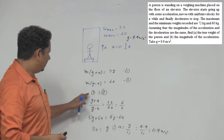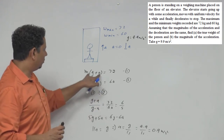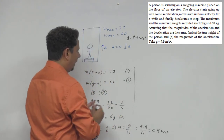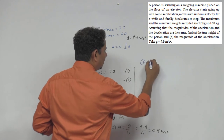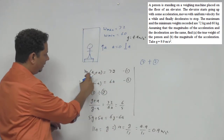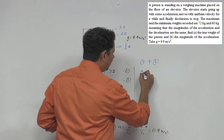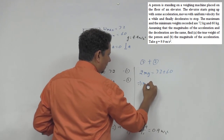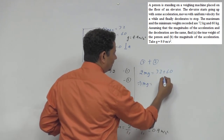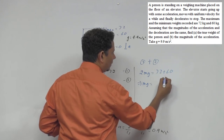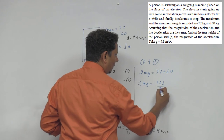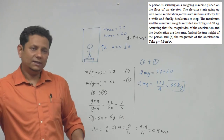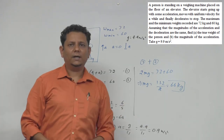For the true weight, instead of dividing the two equations, we add them. Adding equation 1 and equation 2: the ma terms cancel. We get 2mg = 72 + 60 = 132, which implies mg = 132 / 2 = 66 kg. So the true weight is 66 kg. Final answers: acceleration = 0.9 m/s² and true weight mg = 66 kg.